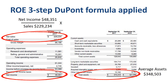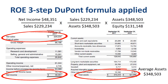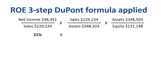Once you have filled in these numbers into the equation, you can calculate return on sales at 21%, asset turnover at 0.66, and leverage at 2.66. When you multiply these three components, you obviously get to the same 37% total ROE number that we started with.